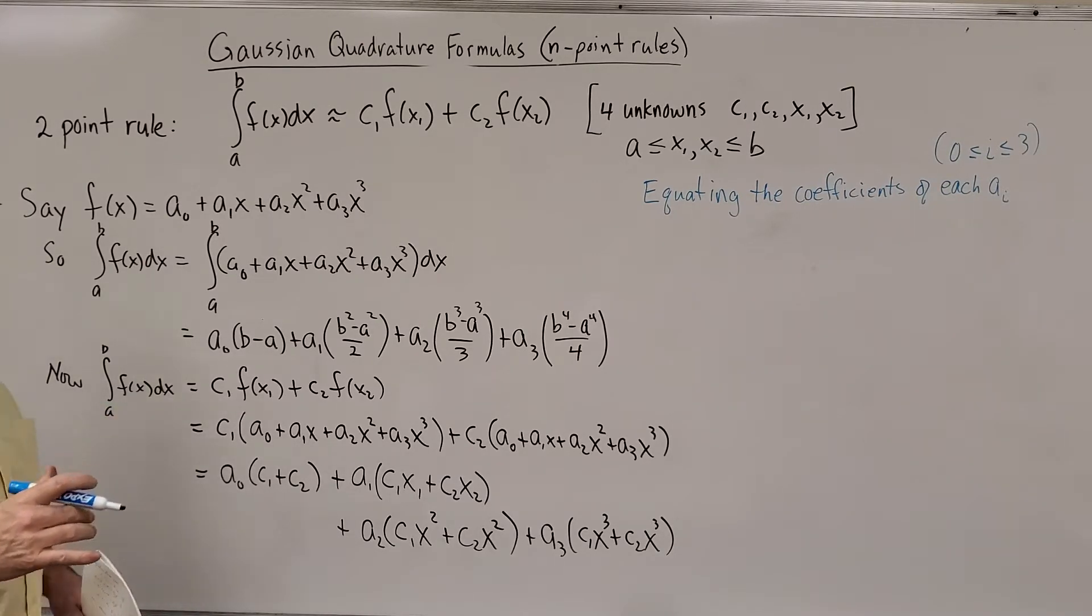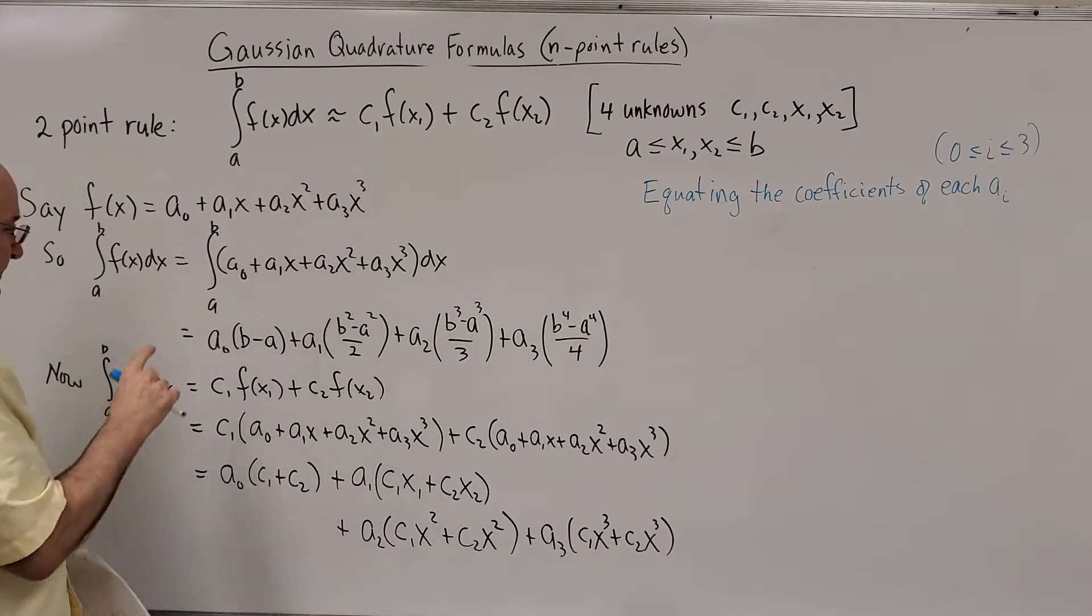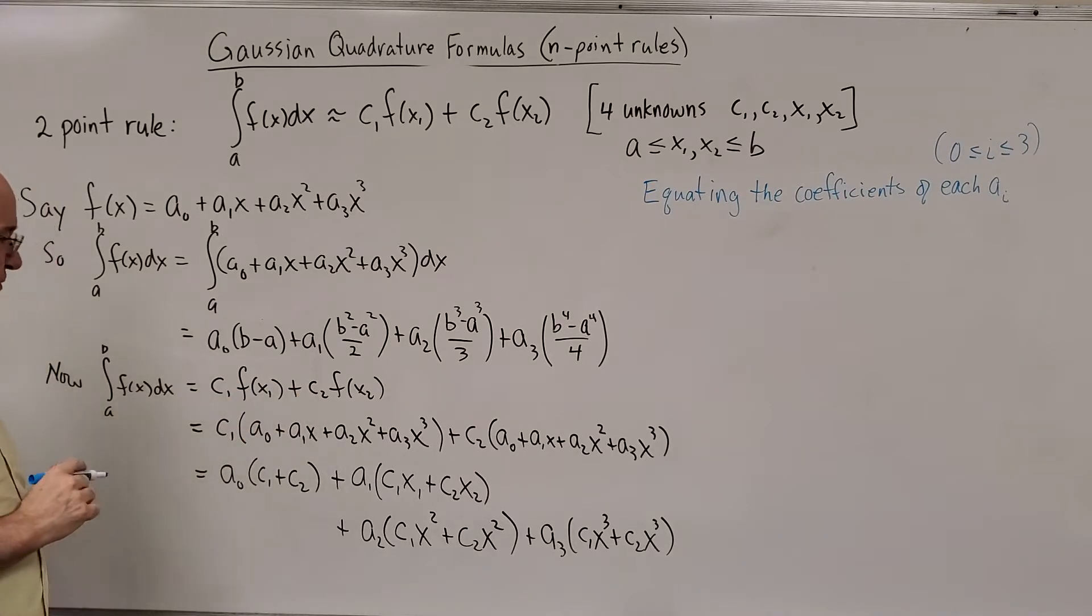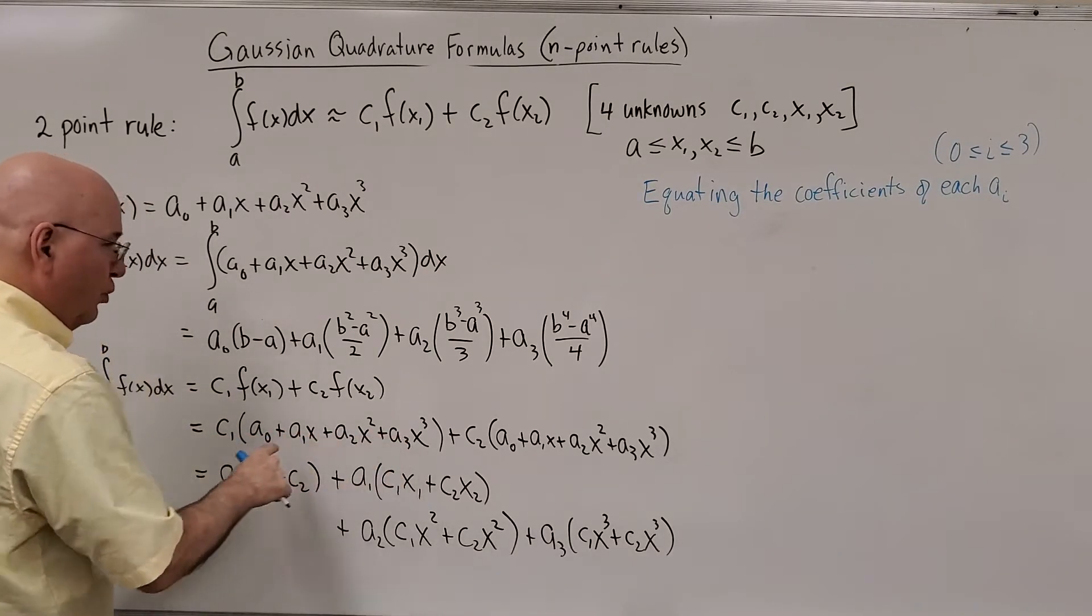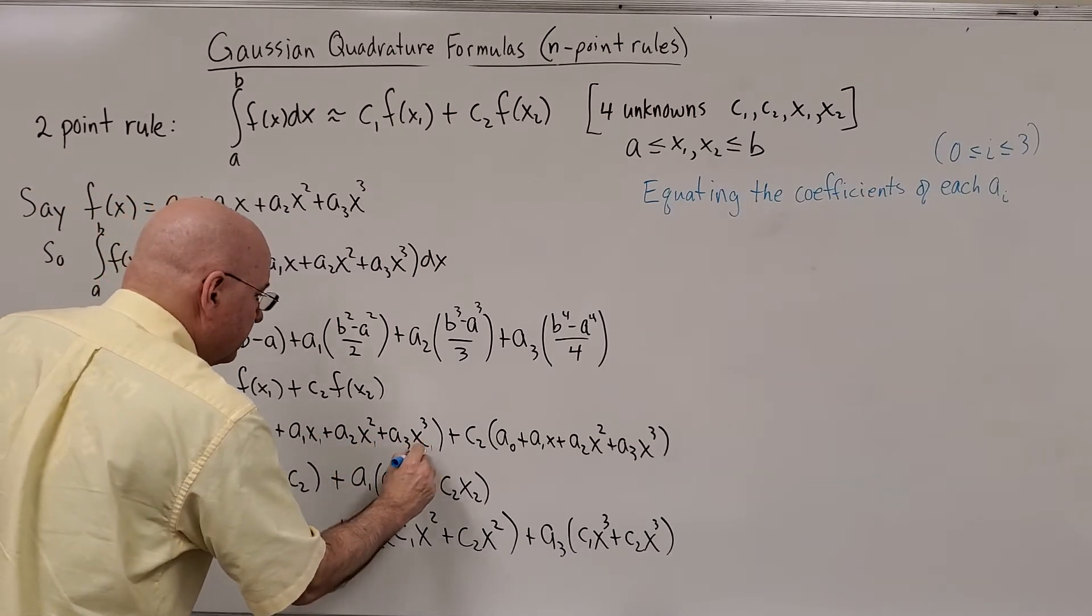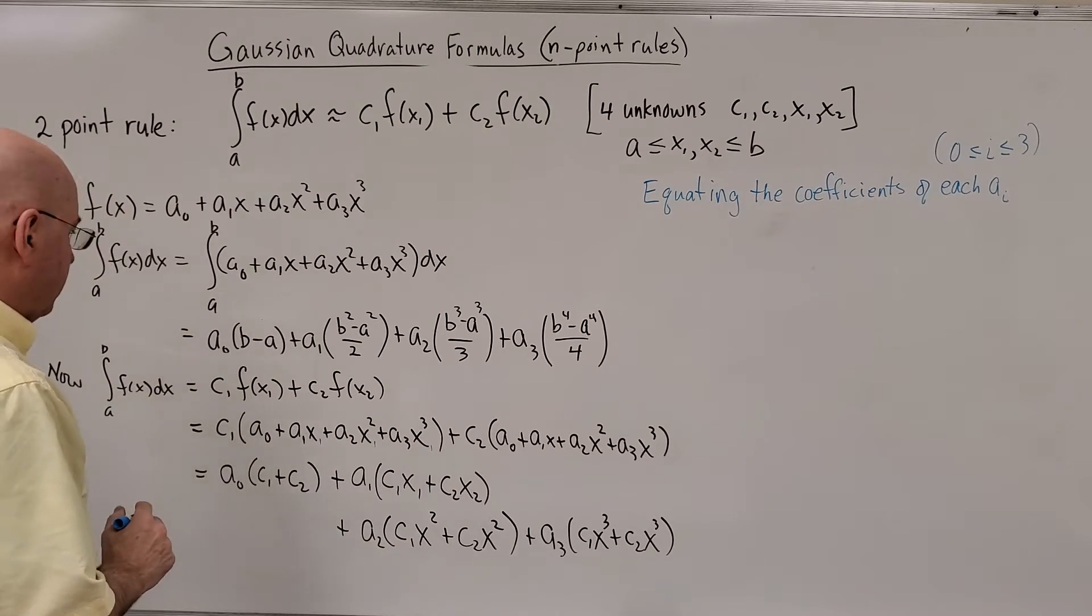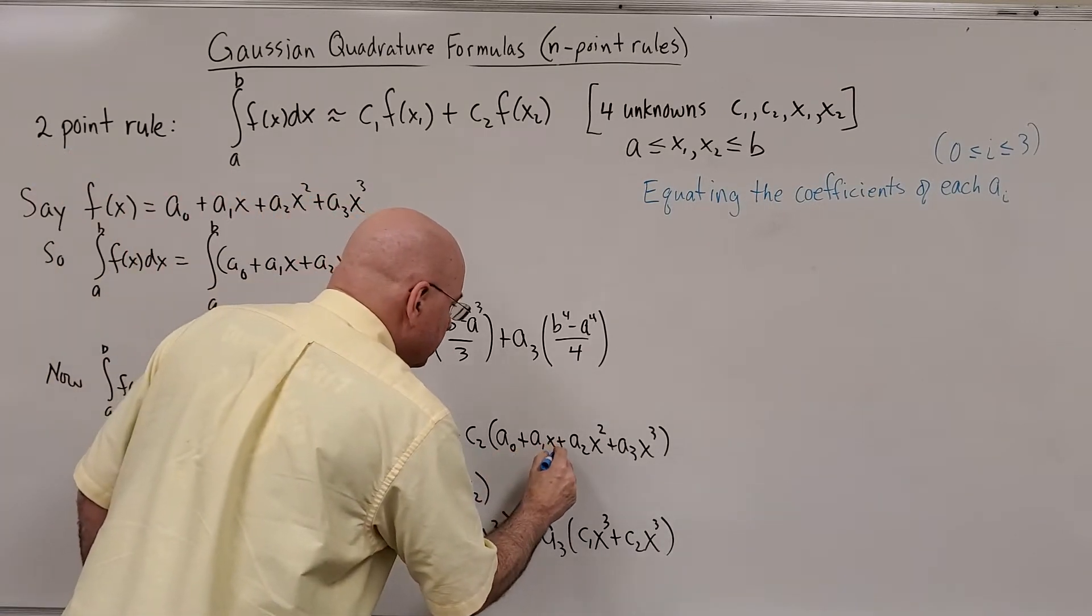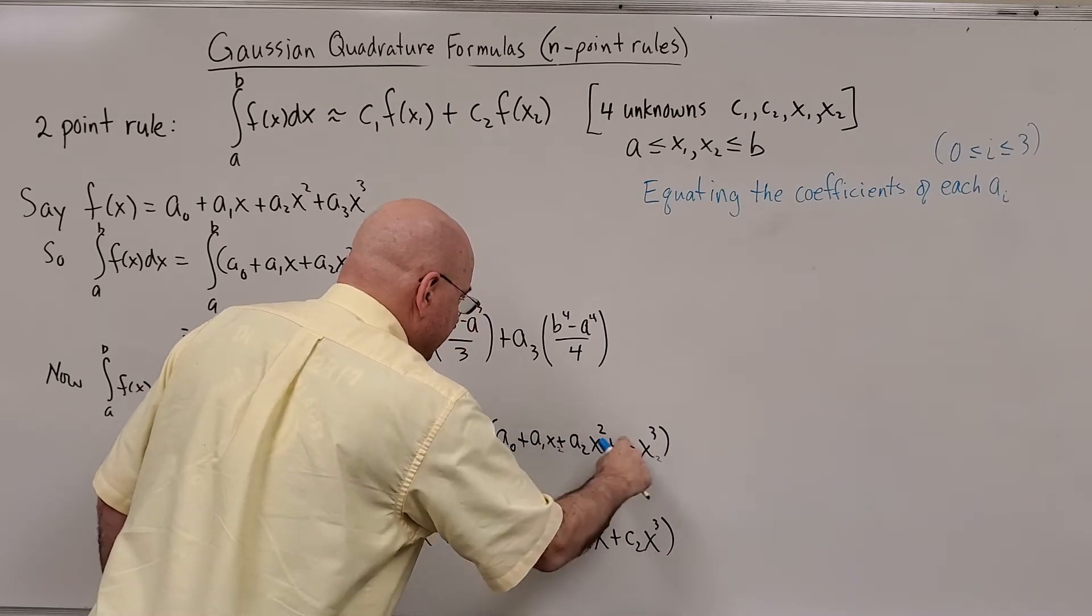Okay, now we are going to go back to the two-point formula, where we want this integral to be C1F of X1 plus C2F of X2. And using our function up here, we get C1F of X1, I left off the subscripts there, plus C2 times F of X2.